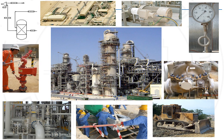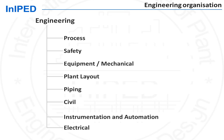Engineering is organized in disciplines, and the traditional disciplines are: process, which comes first; safety; equipment mechanical, in charge of machinery of any type — pressure vessels, heat exchangers, rotating equipment, fired equipment such as boilers, turbines, and so forth; plant layout; piping; civil; instrumentation and control; and electrical.